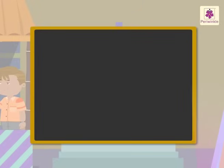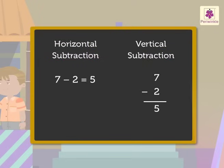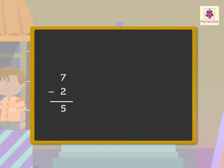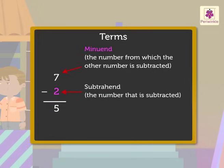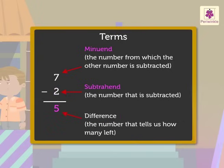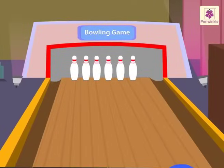Now let's look at the ways to write subtraction. This is called horizontal subtraction. This is called vertical subtraction. Certain terms are also used for the numbers in a subtraction sentence. The number from which the other number is subtracted is called the minuend. The number that is subtracted is called the subtrahend. The number that tells us how many are left is called the difference.